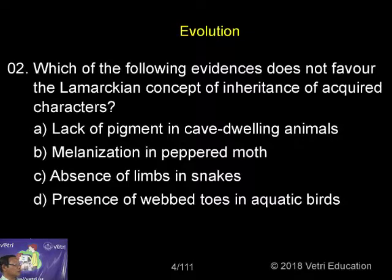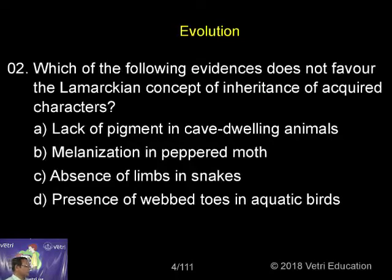Examples include: lack of pigment in cave-dwelling animals, melanisation in peppered moth, absence of limbs in snakes, and presence of webbed toes in aquatic birds.